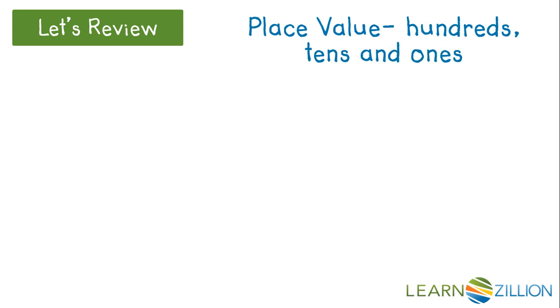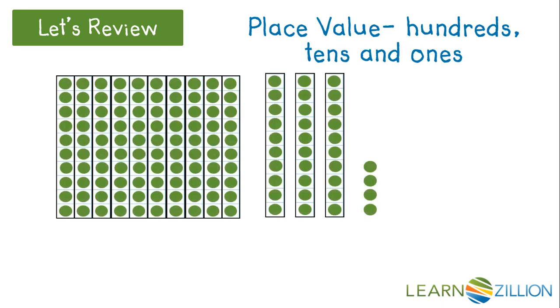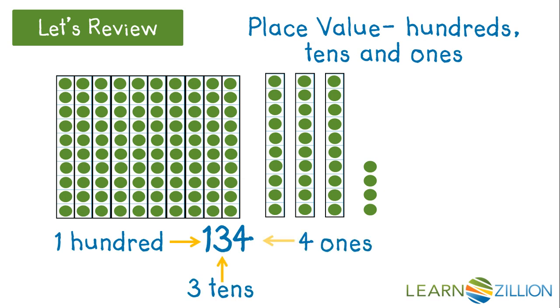Place value: hundreds, tens and ones. This is 134. 100, 3 tens, 4 ones. 100 plus 30 plus 4 is 134.